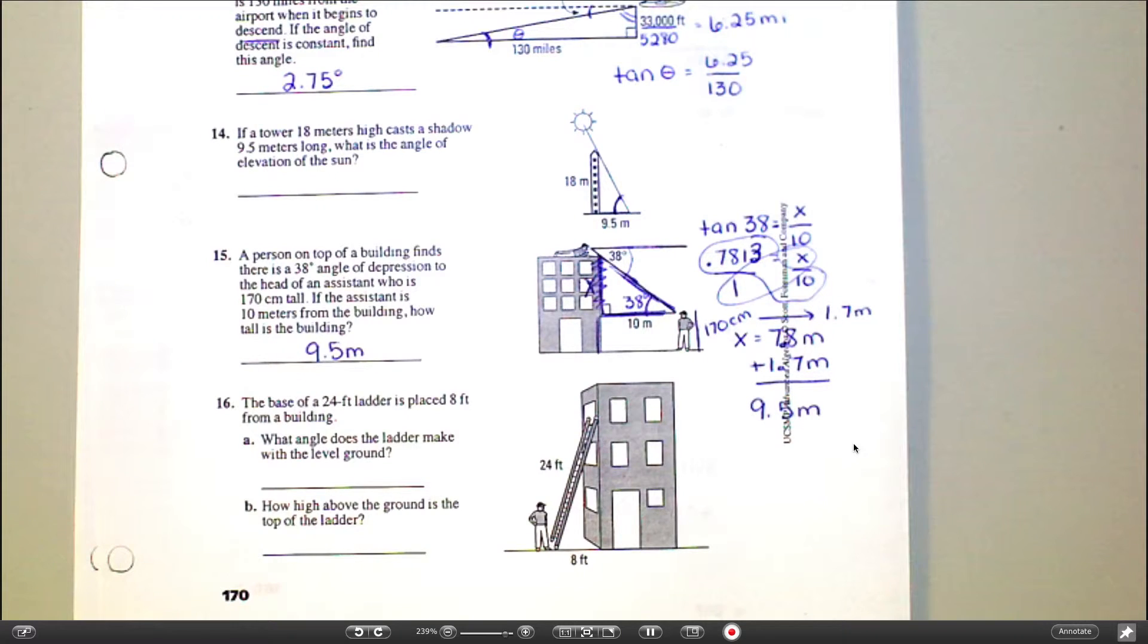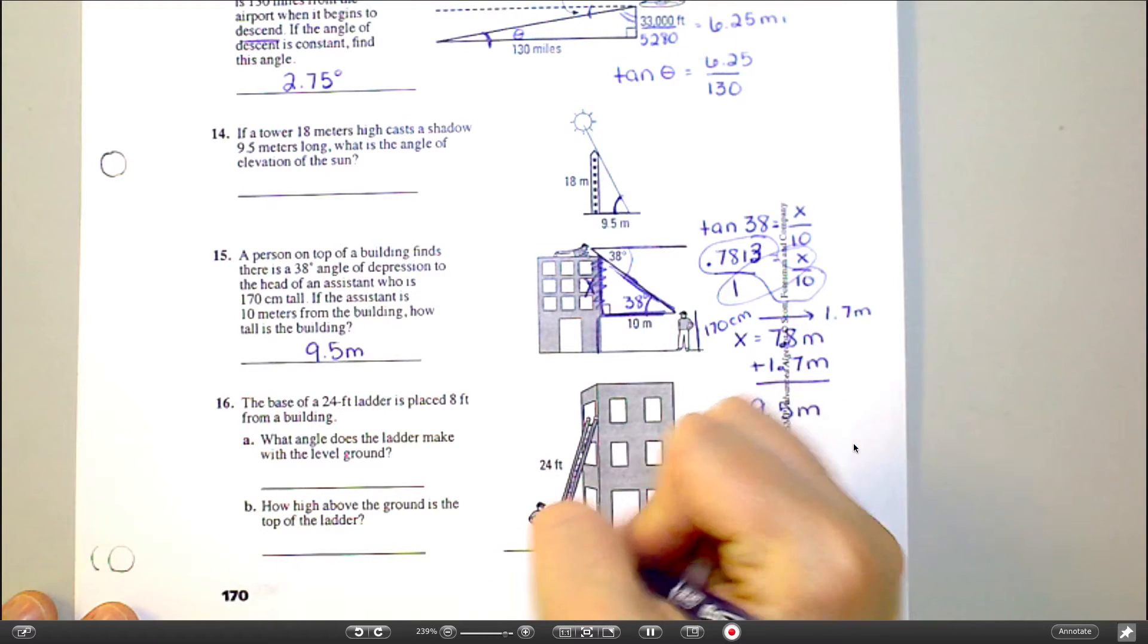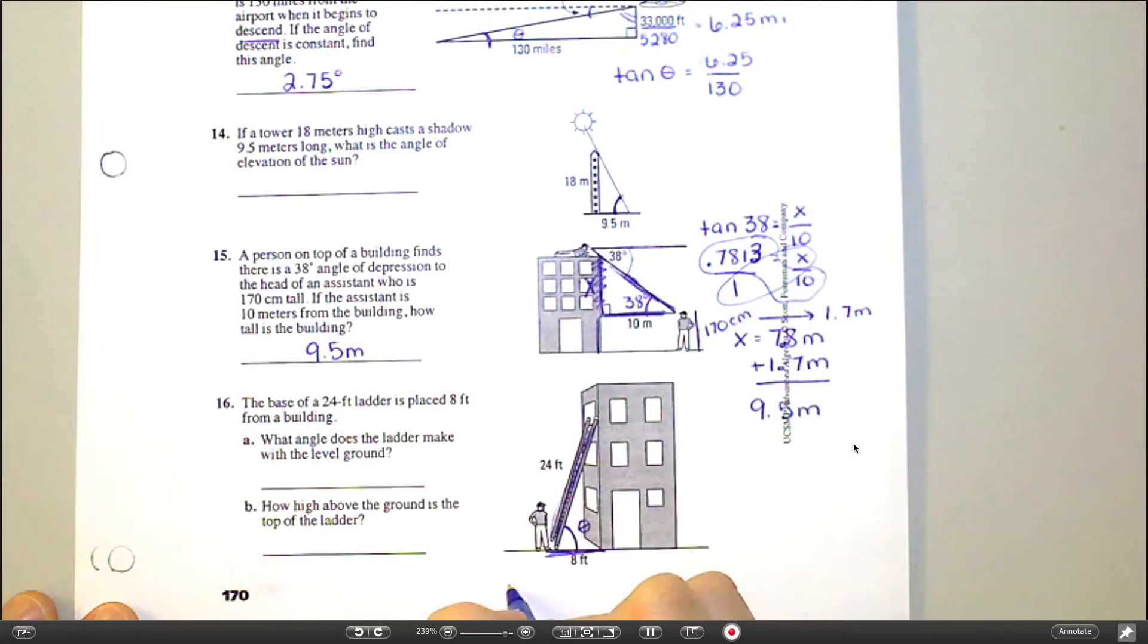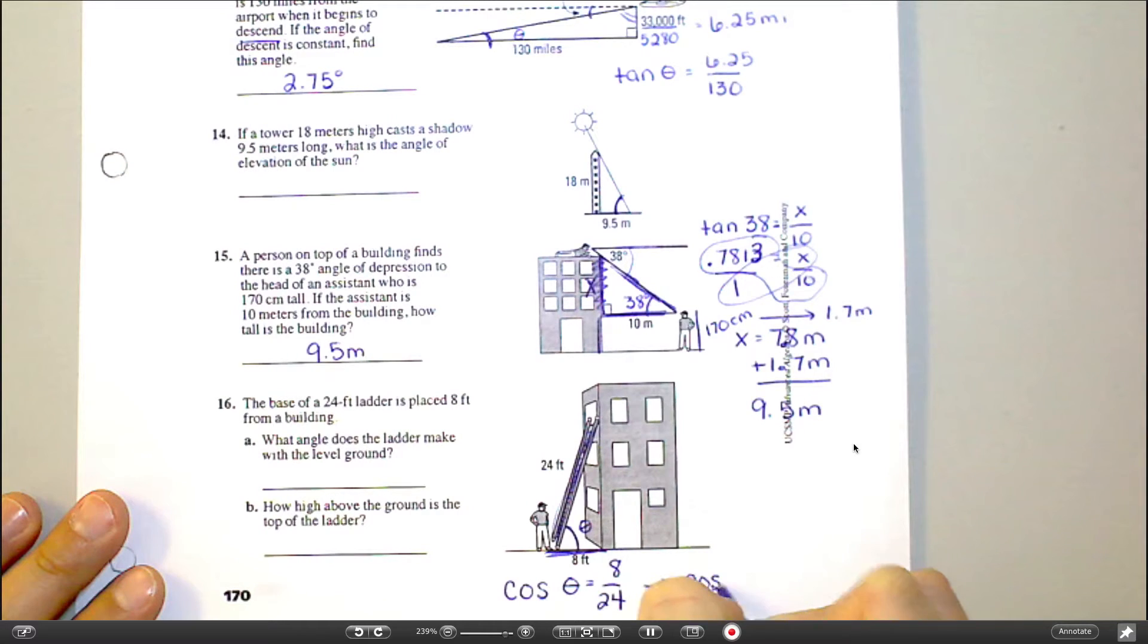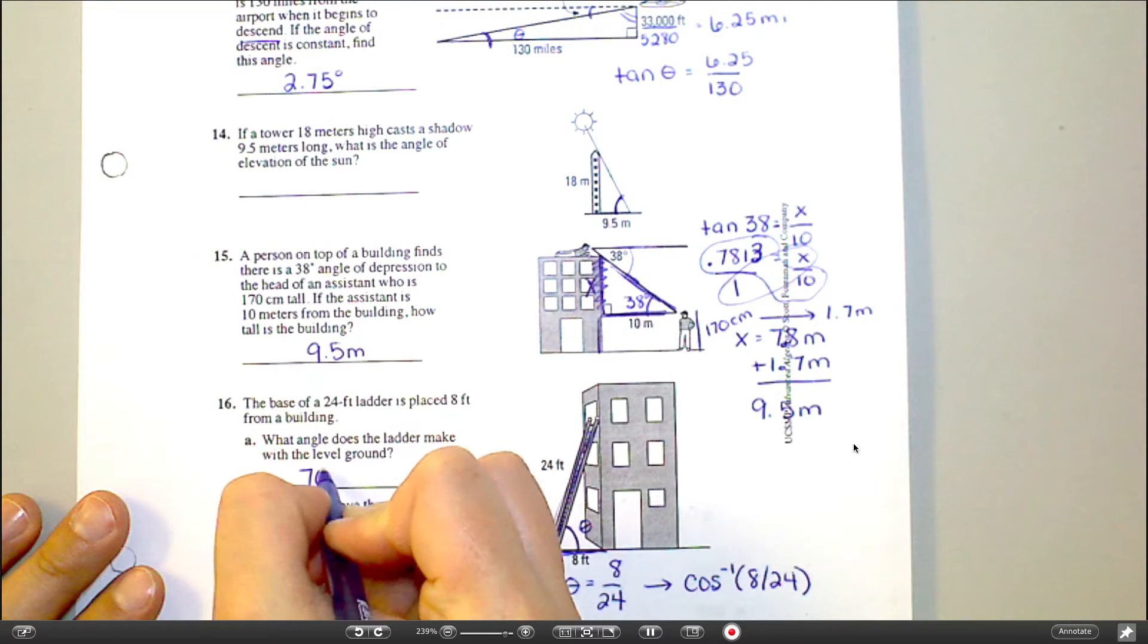And 16B, am I hearing? Yeah. There's actually two different ways you could do 16B. Let's look at, let's do part A together first. So, what angle does the ladder make with the ground? That's looking for this angle right here. And I have this side and this side. So, that's adjacent and hypotenuse. So, this is going to be cosine. I would say cosine of theta equals adjacent over hypotenuse, 8 over 24. Now, from here, you are not typing cosine of 8 over 24. You are typing what? The inverse. The inverse cosine. So, cosine negative 1 of 8 divided by 24. And I think it comes out to like 71 degrees.